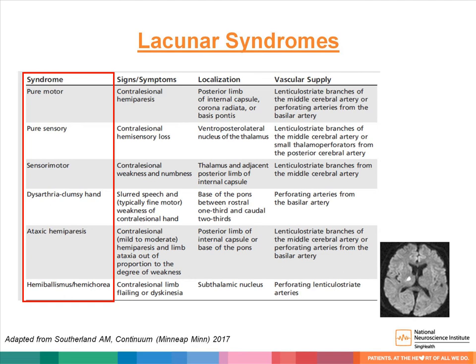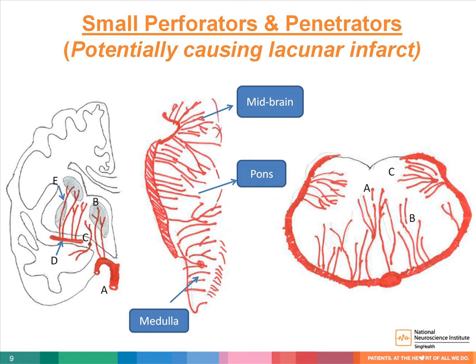The localization of lacunar syndrome is usually at the subcortical region and brainstem. This diagram shows the anatomy of small perforators originating from major arteries. The left diagram shows anterior circulation. A is the basilar artery, B is the thalamic perforators which originate from the posterior cerebral artery, C is the anterior choroidal artery, and E is the lenticulostriate artery which originates from D, the middle cerebral artery.